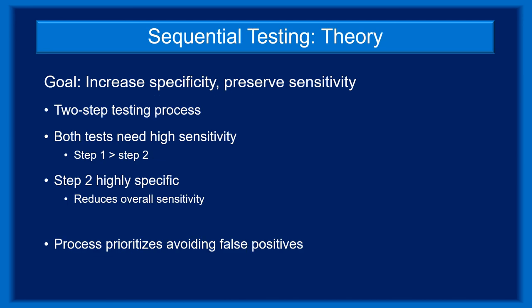Sequential testing can be a very valuable diagnostic strategy. In diseases where missing the diagnosis carries significant consequences and treatment carries substantial risk, it's especially important to know right from the start whether or not the patient has the disease. The rationale: use a highly sensitive test to cast a wide diagnostic net, then use a highly specific second test to identify those who truly have the disease. It's important for the Step 2 test to also be sensitive; otherwise, many true positives captured in Step 1 will be rejected in Step 2. Ultimately, the sensitivity of sequential testing is always less than the sensitivity of Step 2 alone, but specificity is always greater — the process avoids false positives at the expense of generating false negatives.